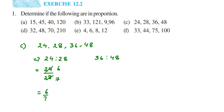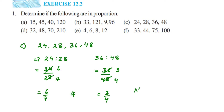For 36 by 48: cancel directly in the twelve table — twelve threes are 36, twelve fours are 48 — so we get 3 by 4. Comparing: 6 by 7 is not the same as 3 by 4. They are not equal, which means they are not in proportion. Answer is No.